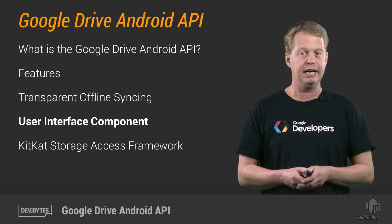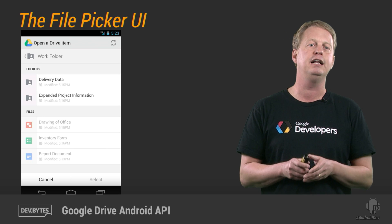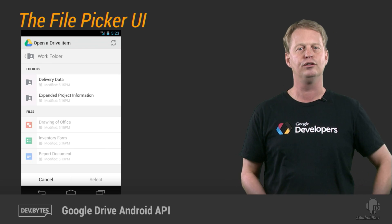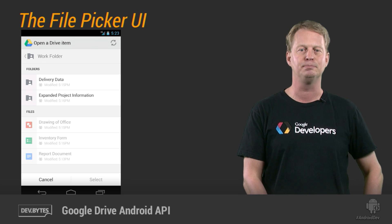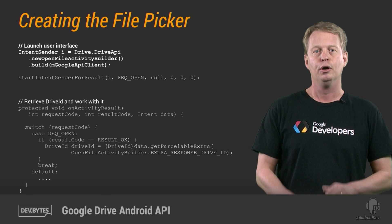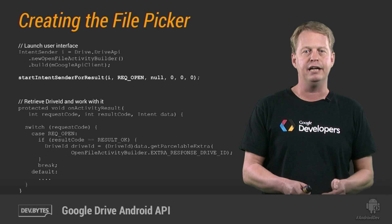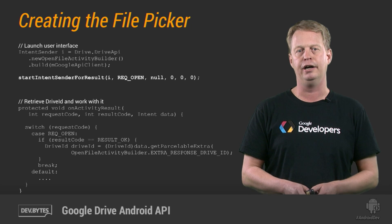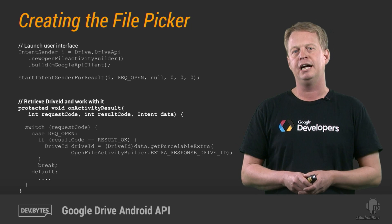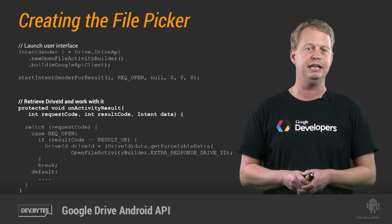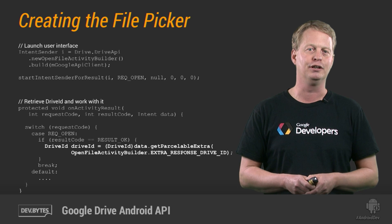Another great feature of the Google Drive Android API is the user interface component. In the first release of the API, there is a folder and file navigation and selector. This makes it really easy to write an application where the user needs to select folders or files. The only thing you need to do is display this file picker. First of all, you create an intent which opens up the file activity builder. Then the actual magic happens when the intent is fired — the user will be able to select the files or folders that they want. Once the user has selected their files, the result will be available in the onActivityResult method, as usual on Android. And finally, you get the drive ID for the content that you can work with.